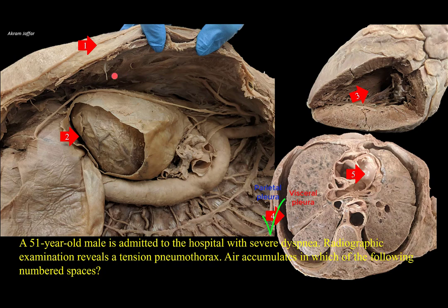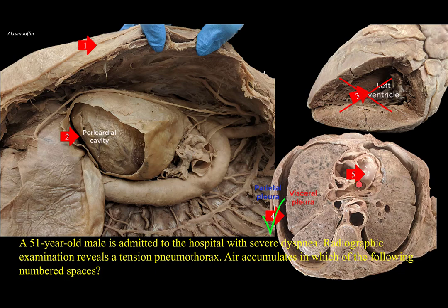Space one is located in the subcutaneous tissue, and it may contain air after penetrating trauma of the respiratory passages, but this results in subcutaneous emphysema, not pneumothorax. Space two is the pericardial cavity, and it might contain air in a condition known as pneumopericardium, not pneumothorax — air introduced into the pericardial cavity from a penetrating wound. Space three is inside the cavity of the left ventricle, and five is pointing at the inside of the arch of the aorta. Both three and five have no relation to pneumothorax.